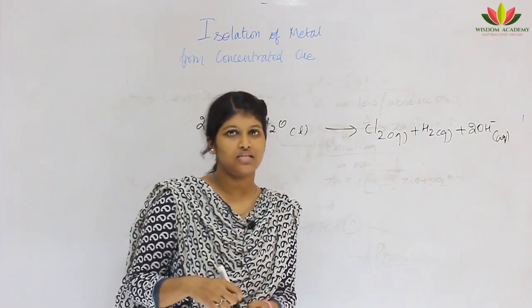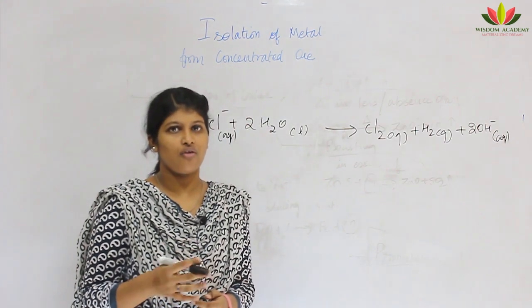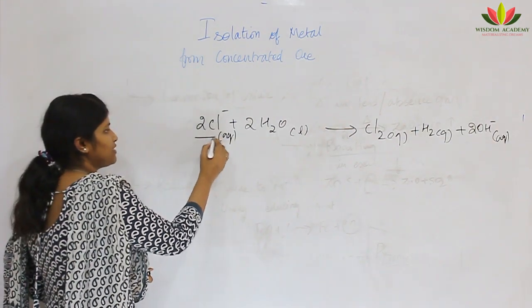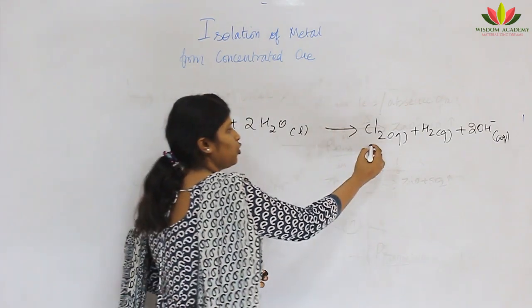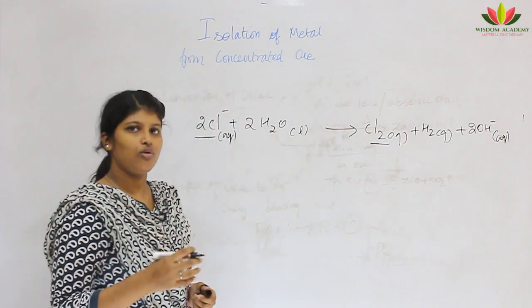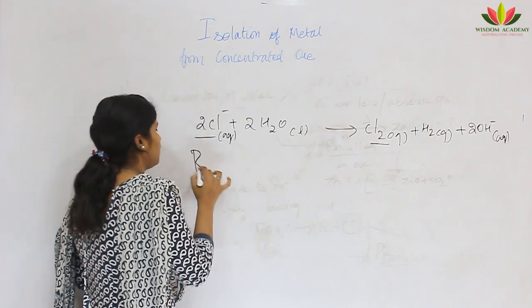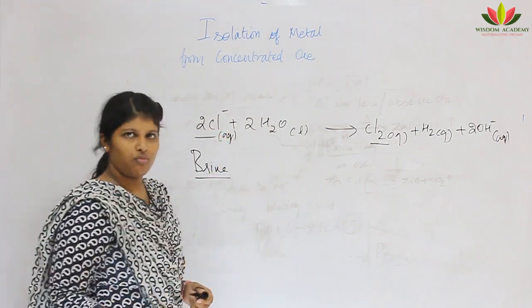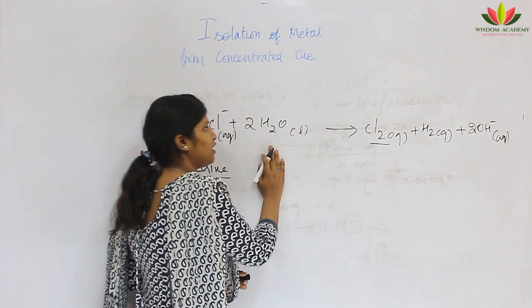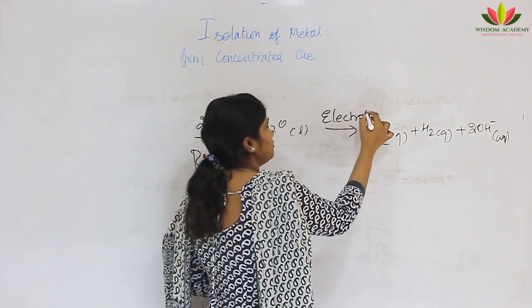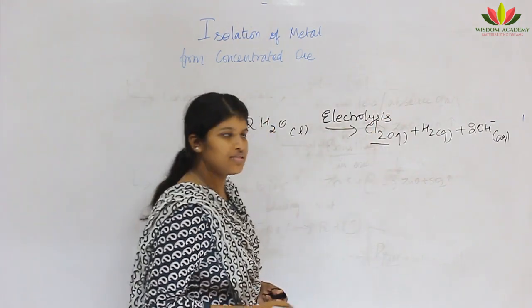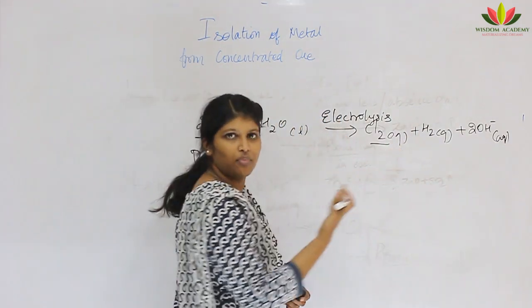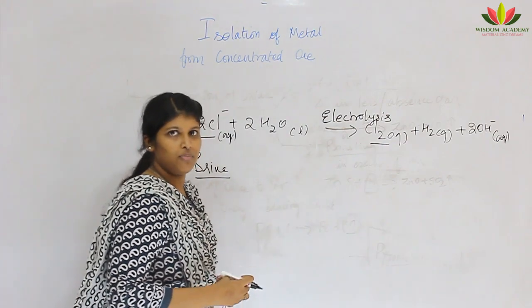In some cases we also do oxidation — for non-metals. For metals we do reduction, but if we need to extract a non-metal like chlorine from a chloride, we go for oxidation. Generally we produce chlorine from brine, that is from sea water. We take a chloride — sodium chloride, potassium chloride — and treat it with water. When we electrolyze it, it produces chlorine gas, hydrogen gas, and a complementary base such as sodium hydroxide or potassium hydroxide.